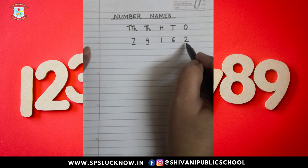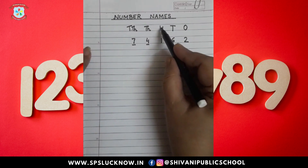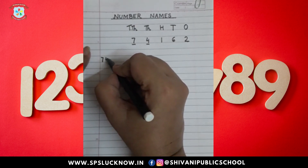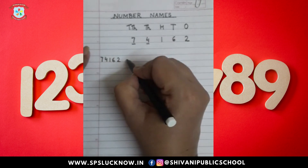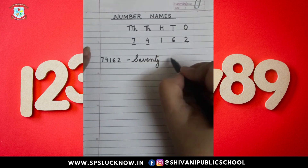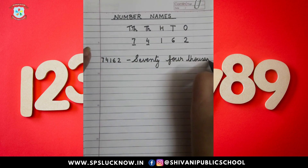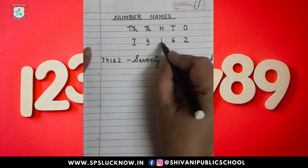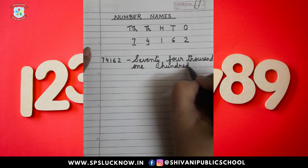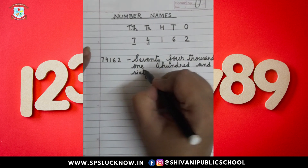Like this we will read the numbers. I repeat again: 74,000, one hundred and sixty-two. In words we can write it like this: seventy-four thousand, one hundred and sixty-two.